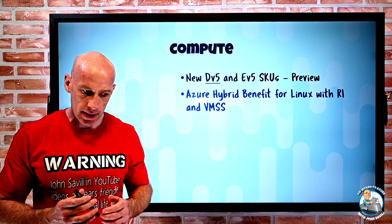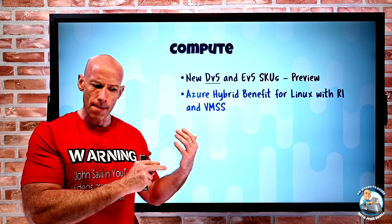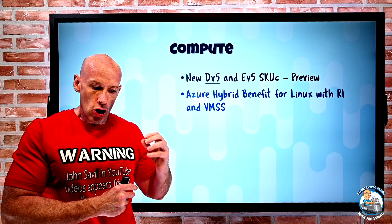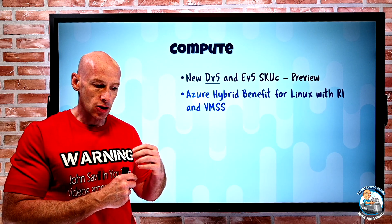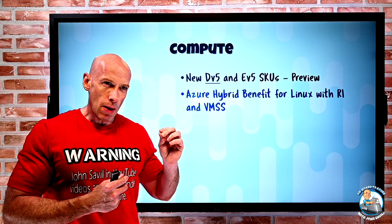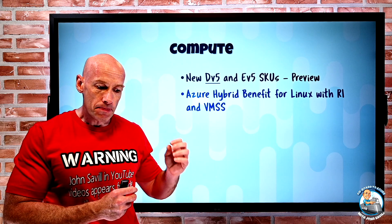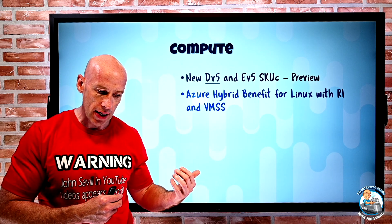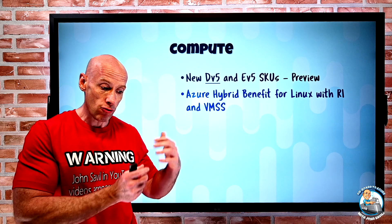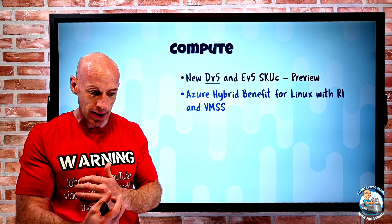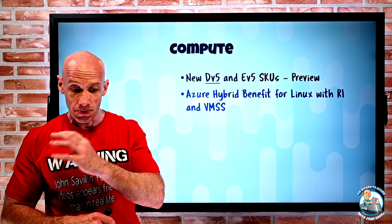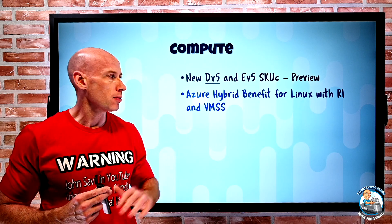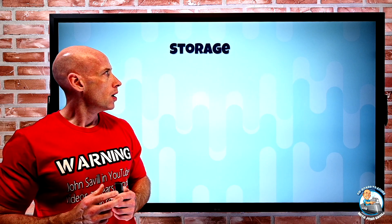Azure Hybrid Benefit for Linux now applies to reserved instances and virtual machine scale sets as well. Launched originally in November 2020, it lets Linux customers bring their on-premises Red Hat Enterprise subscriptions to Azure. Previously this was just for pay-as-you-go VMs. Now you can also use it for reserved instances with three- or five-year pre-commits, and for VM scale sets covering Red Hat Enterprise Linux and SUSE Linux Enterprise.